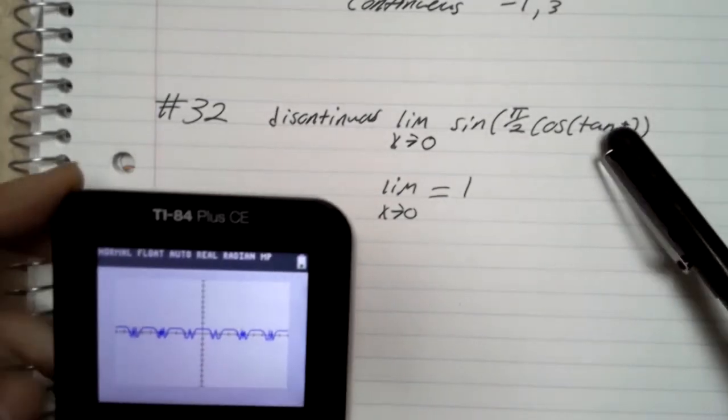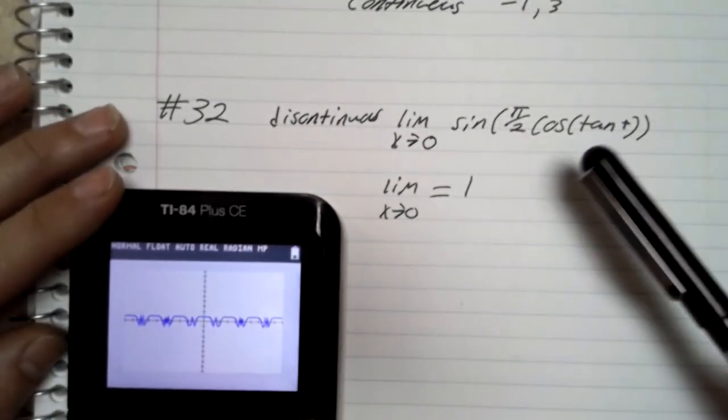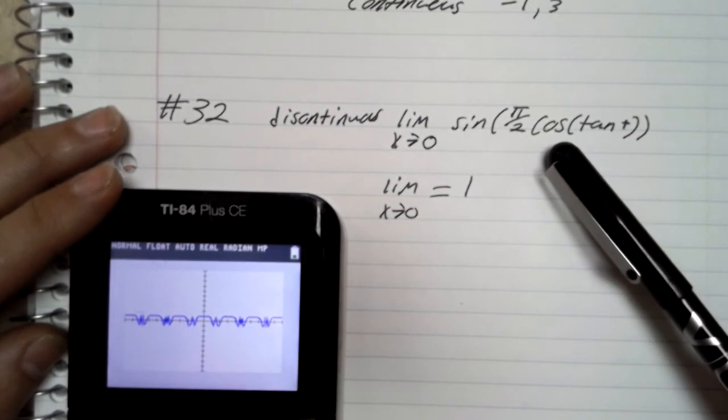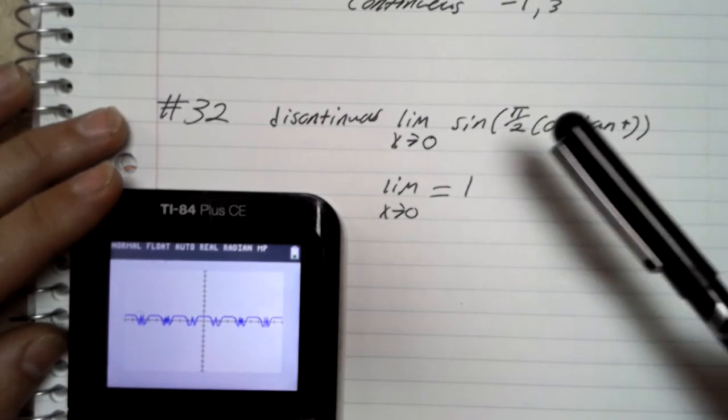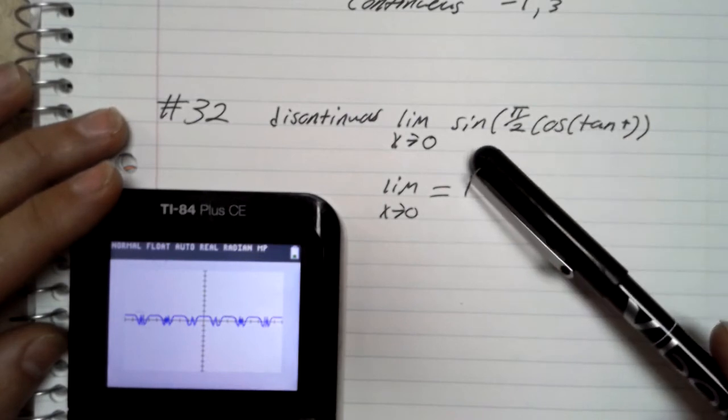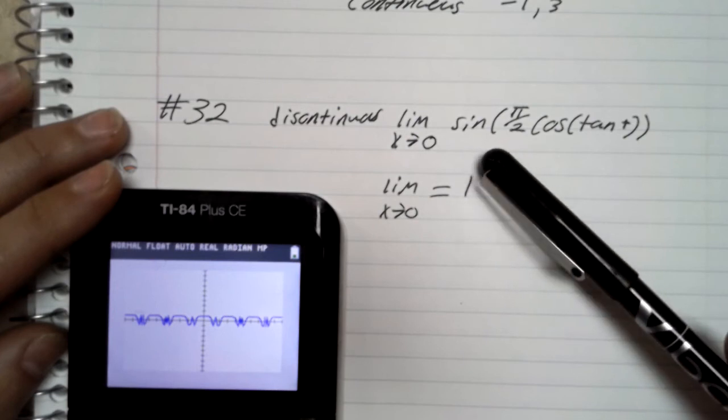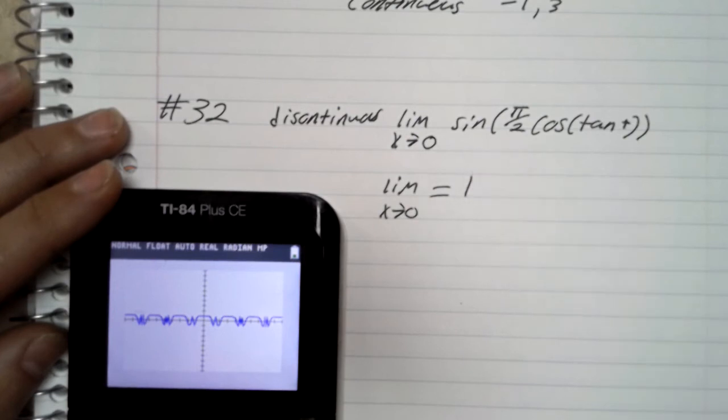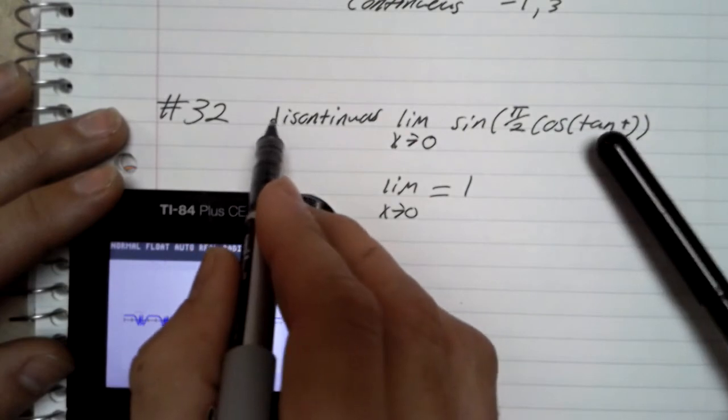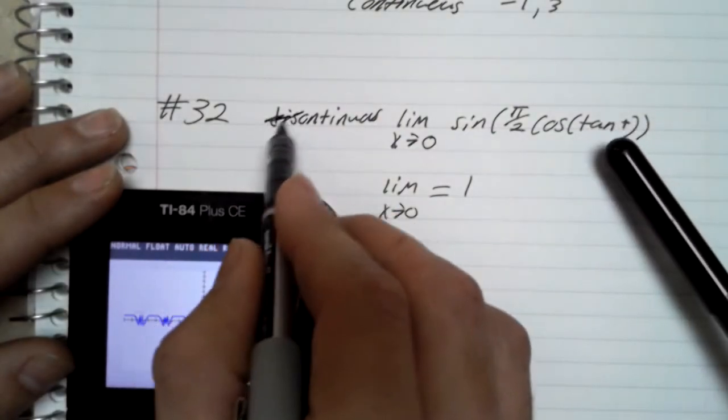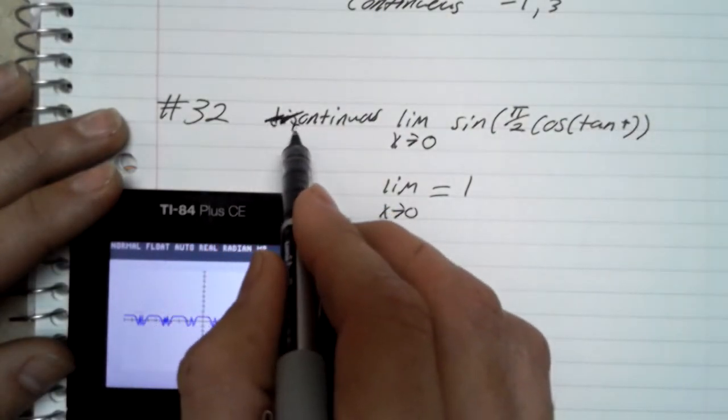So the tangent is continuous on its domain, the cosine is continuous on its domain, the sine is continuous on its domain. Where everything is defined this is continuous, but there are points where the tangent isn't defined.